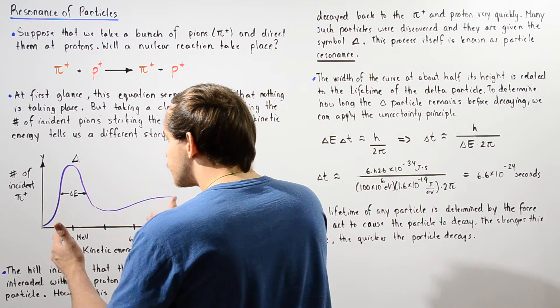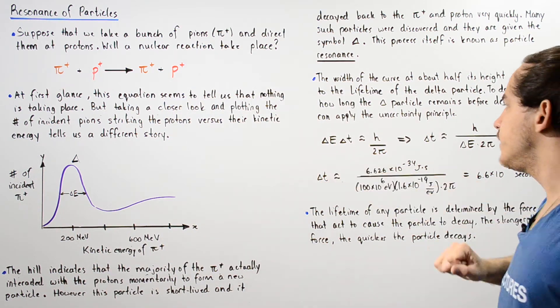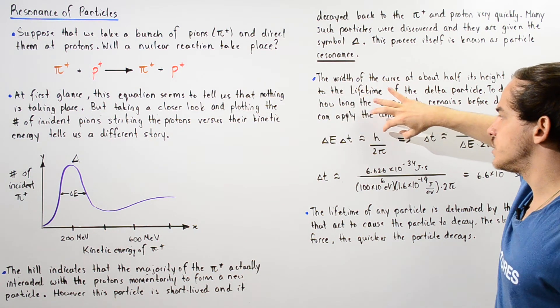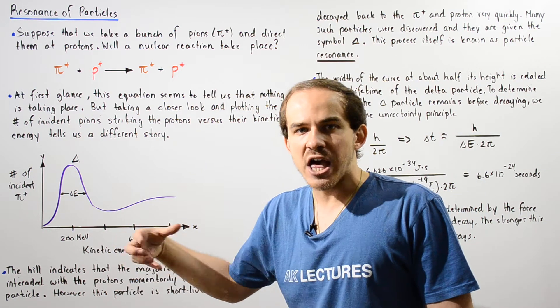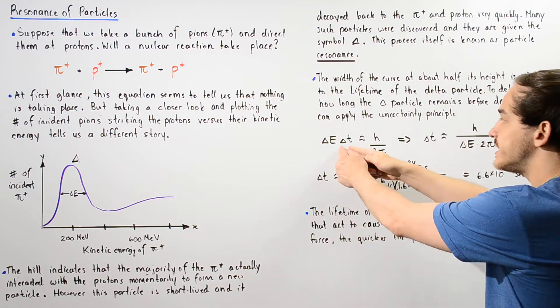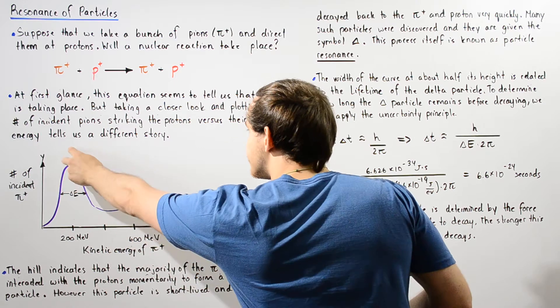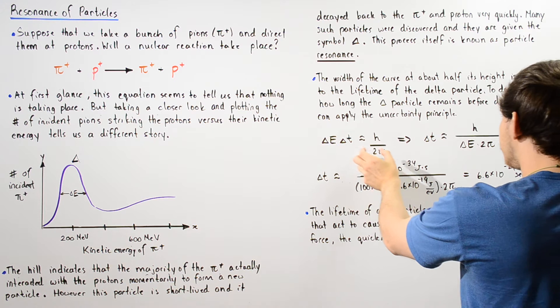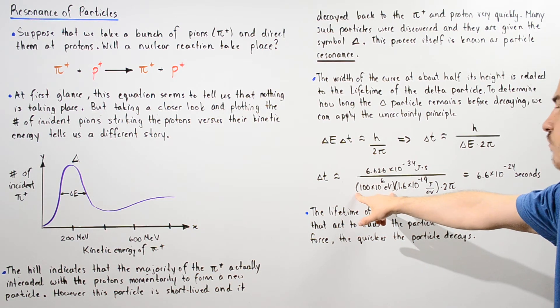So we can use this graph to determine what the ΔE is in our uncertainty principle equation. So ΔE multiplied by ΔT is approximately equal to h divided by 2π, where ΔE is the amount of energy that is not conserved over a time period of ΔT, which corresponds to how long it takes the delta particle to actually decay. So if we solve for ΔT, we see that ΔT is equal to this equation.